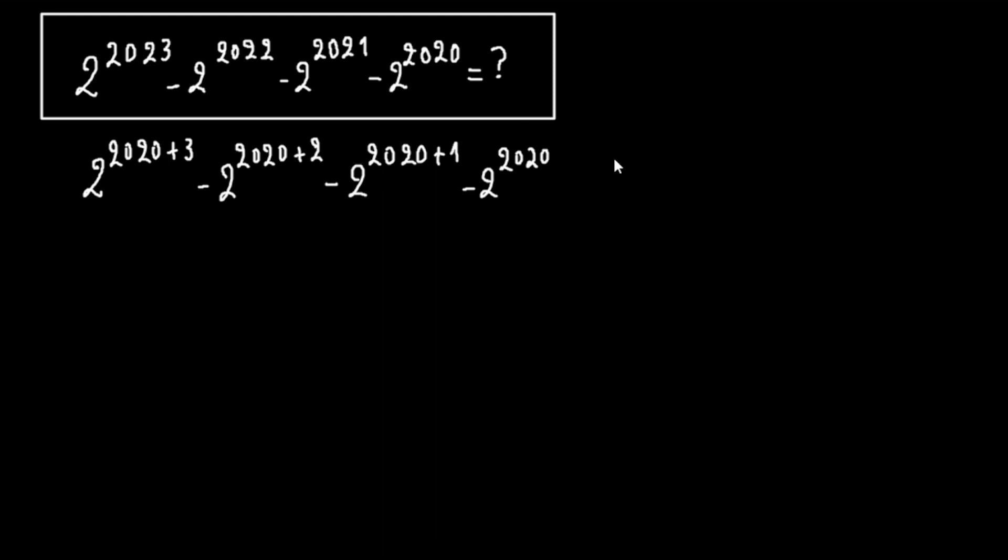Now we know that a raised to m plus n equals a to the m times a to the n. Using this property, we can write 2 to the 2020 times 2 to the 3, minus 2 to the 2020 times 2 to the 2, minus 2 to the 2020 times 2 to the 1, minus 2 to the 2020 times 2 to the 0.